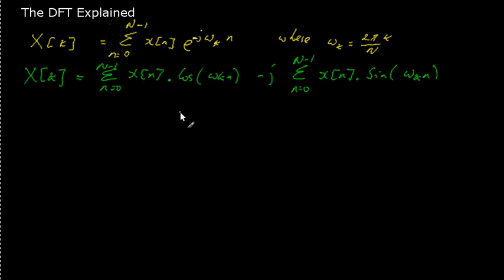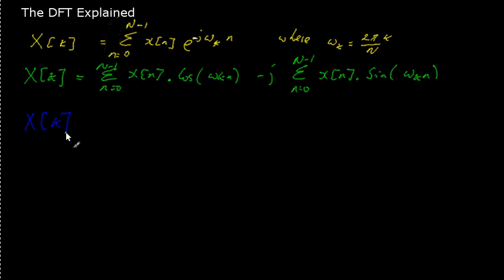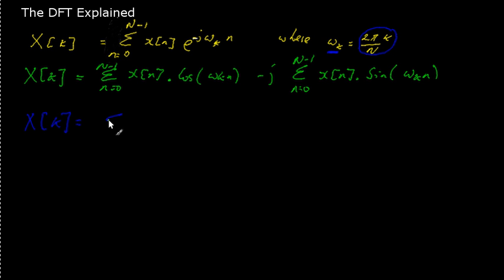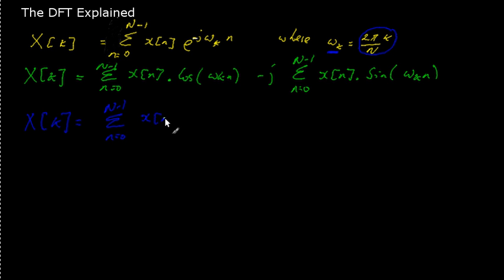I have a figure which hopefully illustrates this process a little bit more clearly. Before getting into that, I just want to expand out this expression a little bit more so we have an understanding of what we'll see in the figure. All I'm going to do is substitute omega k for its defined value, 2π k over capital N. Remember that capital N is the number of samples in the signal you're analysing. So it's the summation from n equals 0 to N minus 1 of x of n multiplied by cos(2π k n / N).